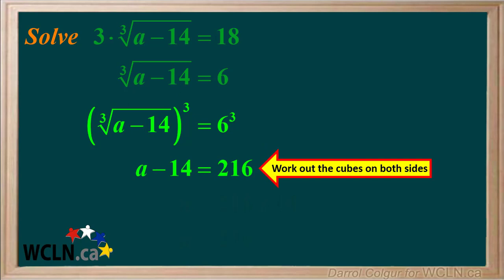Cubing the cube root of a minus 14 gives us a minus 14. And 6 cubed is 216.